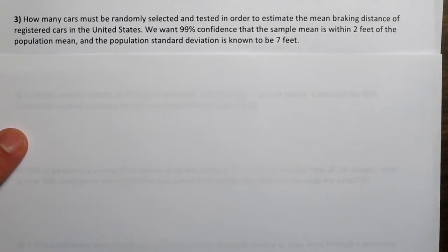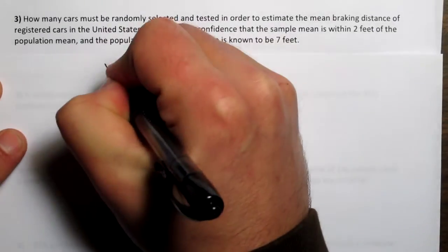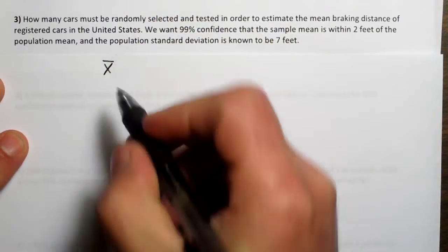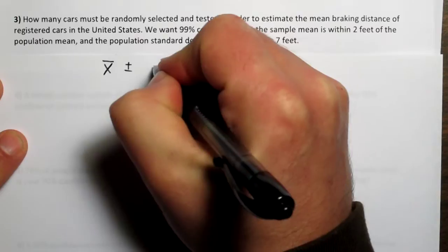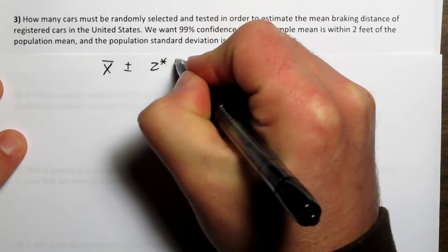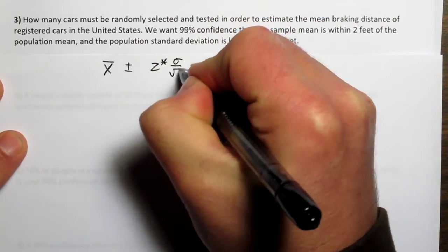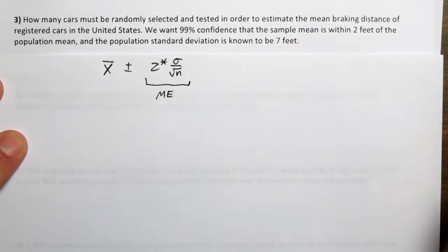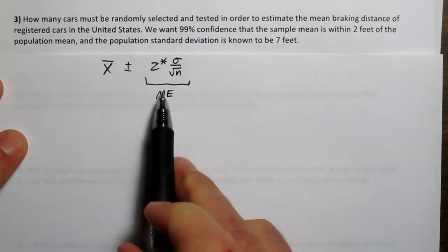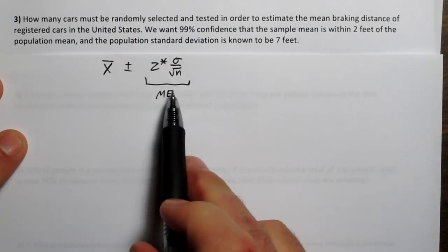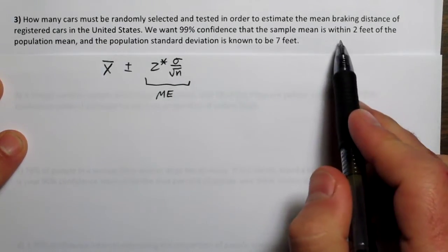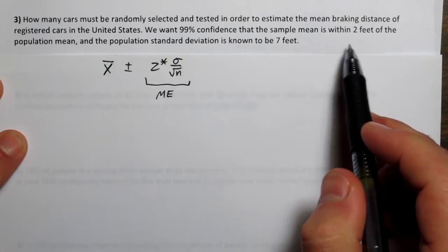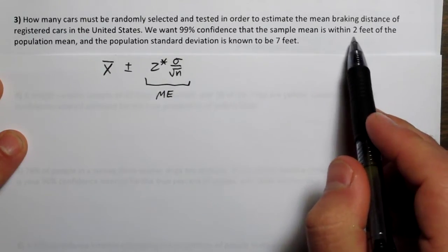Let's look at how a confidence interval is constructed. We take our sample mean, we add and subtract z star times sigma over square root of n. And this piece right here, this is the margin of error. This is what we're adding and subtracting. What we want is a confidence interval with a maximum margin of error of 2 feet.